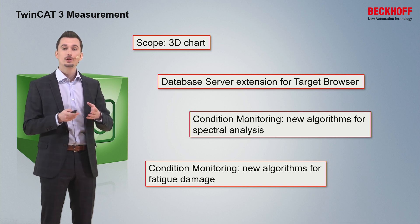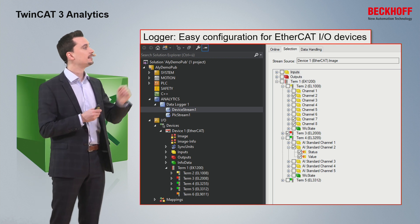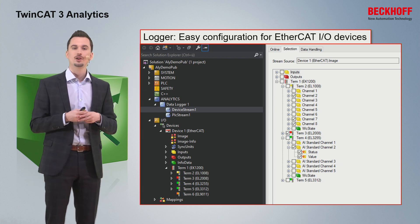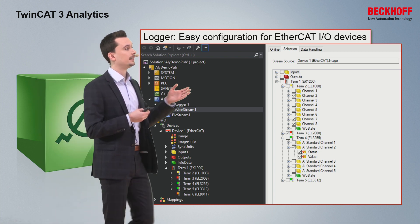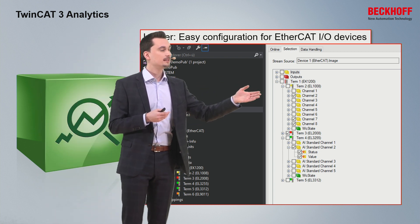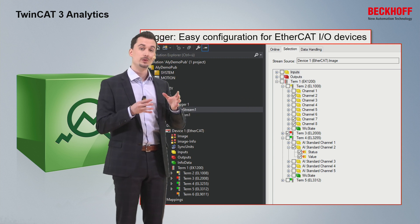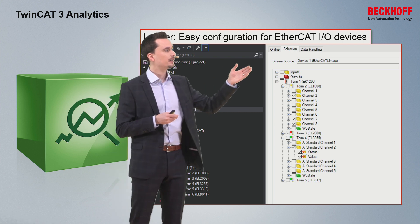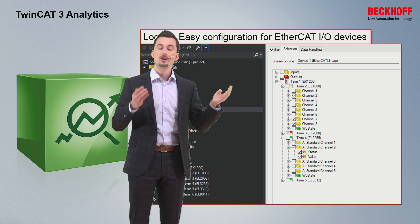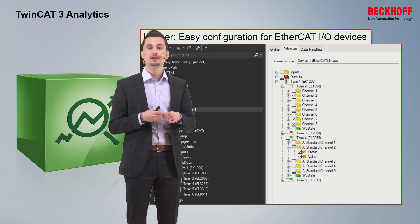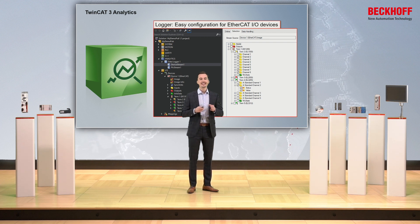We can also give a short overview about the updates of TwinCAT Analytics. Here you can see the update of the Analytics Logger, which enables you to very easily select the IO devices which you would like to log. It is the same IO tree as you are used to from TwinCAT. You can simply search for a specific terminal, a specific channel, or even specific data points which you would like to activate for the exchange.